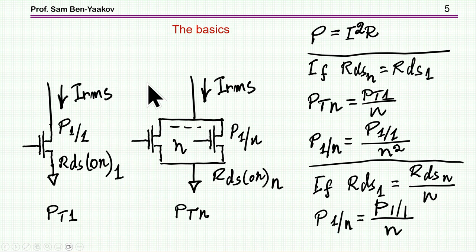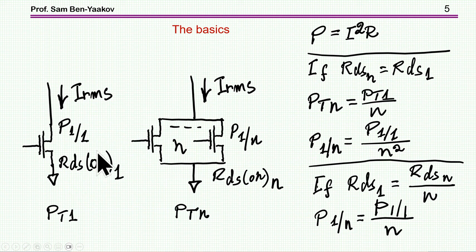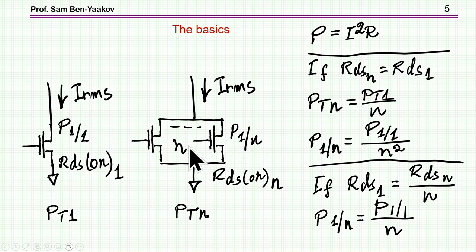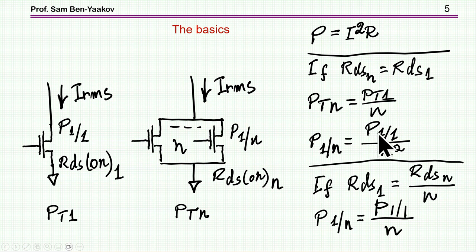Let me start with a very basic concept. If I have two cases — one transistor versus N transistors in parallel — with the same current passing through both configurations, there are two sub-cases. If each of the N transistors has the same resistance as the single one, the total resistance is lower by N, and the power per transistor is divided by N squared.